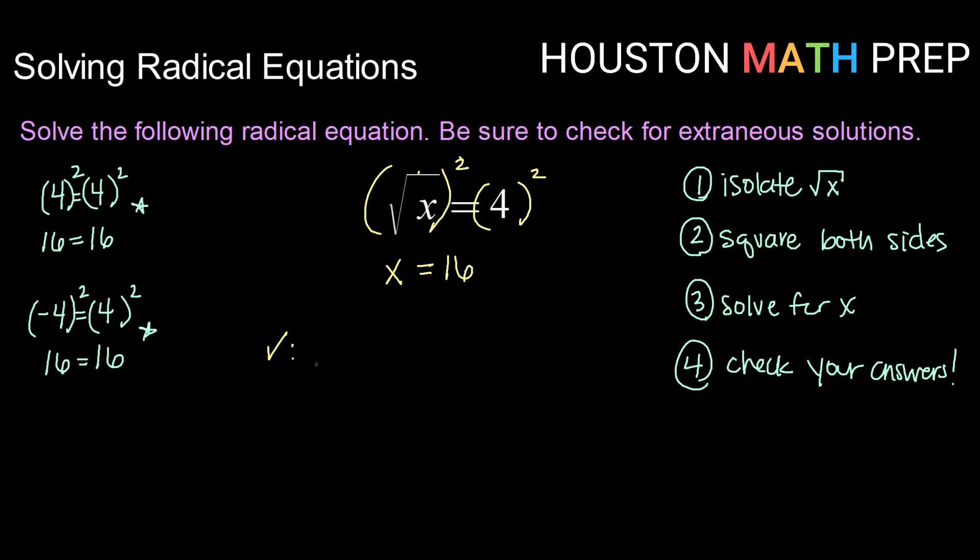But before we box it up and say we're finished we need to check. The way to check is to plug it back in and make sure it doesn't give you any wrong equations. So taking the square root of 16 we can take the square root of a positive number and we know that the square root of 16 is in fact 4. So 4 equals 4 is a true statement which means this is a good solution.